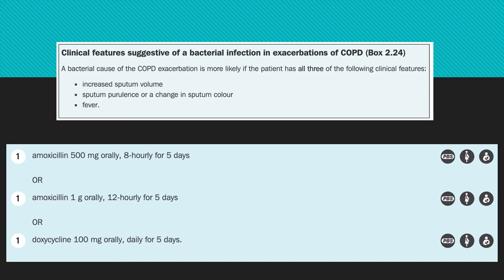Regarding antibiotics: do not routinely give antibiotics in an exacerbation of COPD, but if it's infective, there's a low threshold. Signs suggesting infection include increased sputum volume, sputum purulence — changed from white to yellow or green — and fever. ETG recommends amoxicillin or doxycycline. Augmentin is often given but ETG specifically says do not give it unless you grow something resistant. The three most common pathogens in COPD are Haemophilus influenzae, Streptococcus pneumoniae, and Moraxella catarrhalis, for which amoxicillin or doxycycline is generally fine.